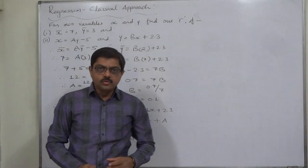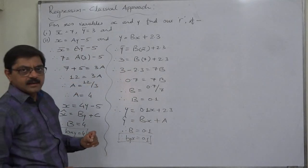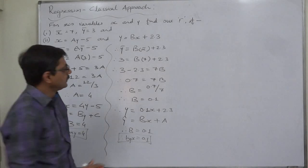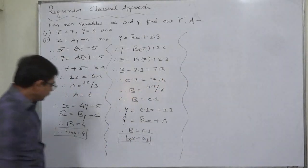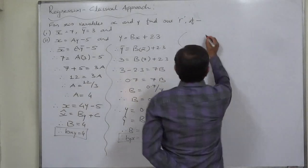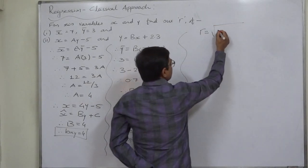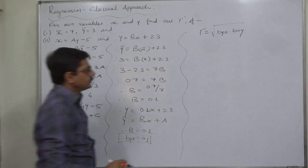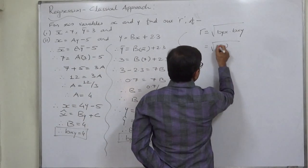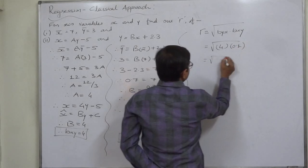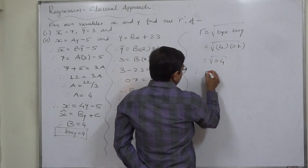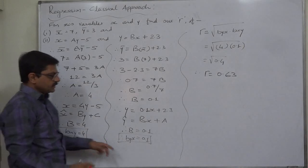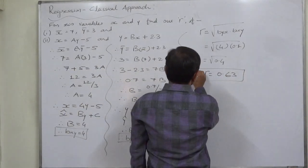I want to make it as simple as possible, that's why there may be repetition of some steps. Now we have bxy as well as byx. So we can find out the coefficient of correlation — it is the square root of the product of the two coefficients of regression, or equivalently, the coefficient of correlation is the geometric mean of the two coefficients of regression. By using a calculator we can find out the approximate value. Since both coefficients of regression are positive, the coefficient of correlation should also be positive.